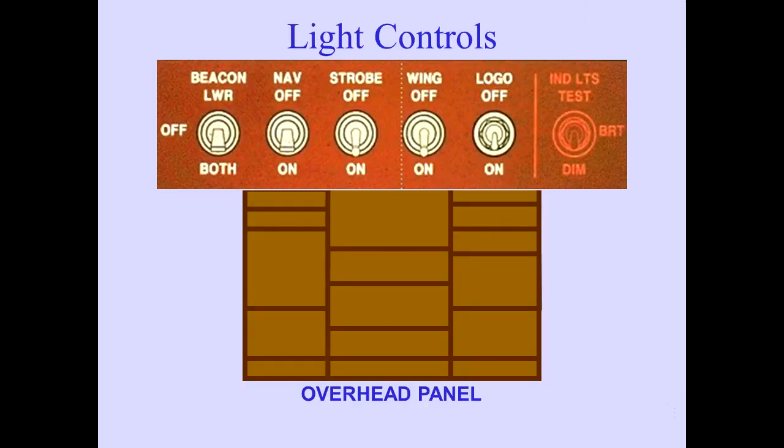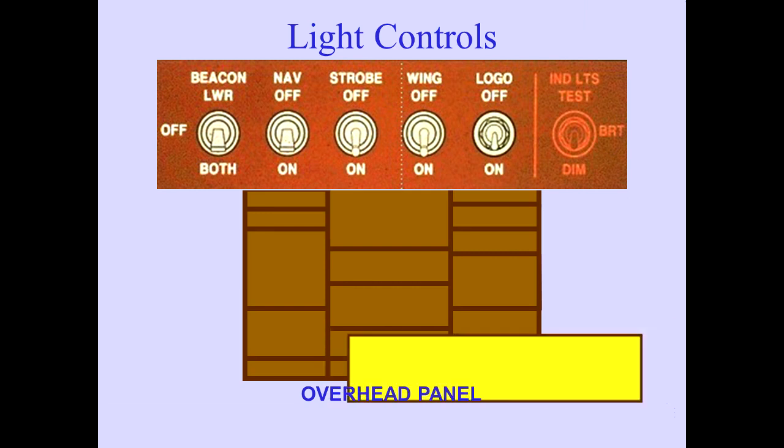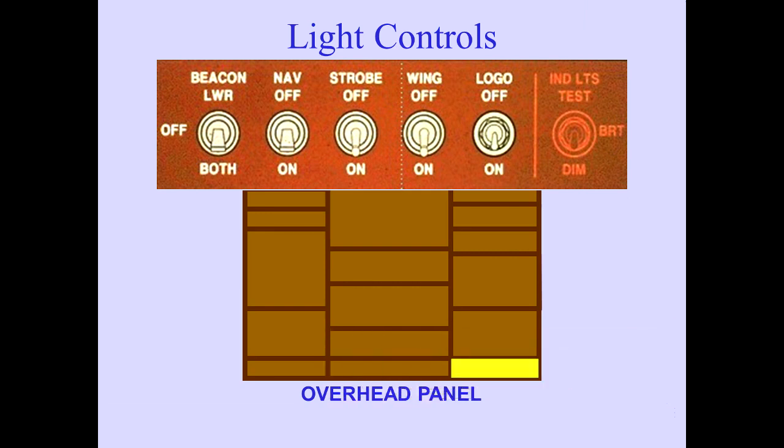Controls for the beacon, navigation, strobe, wing, and logo lights are located on the overhead panel.